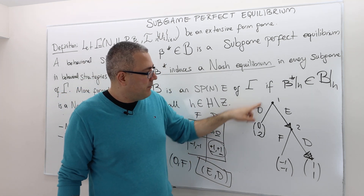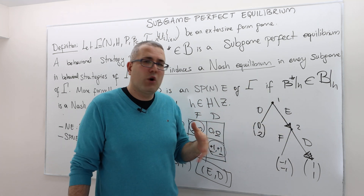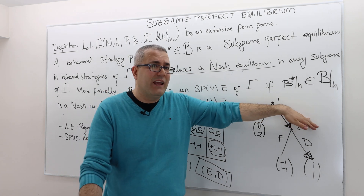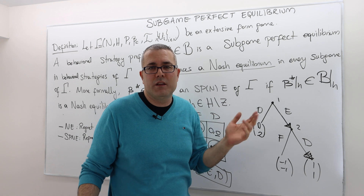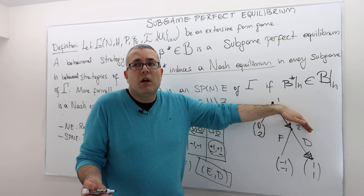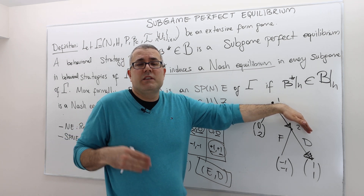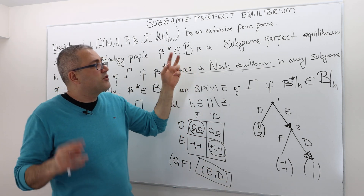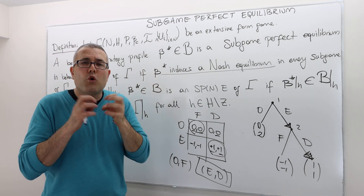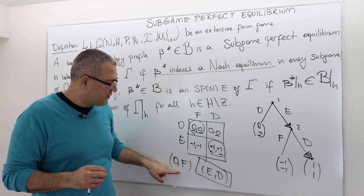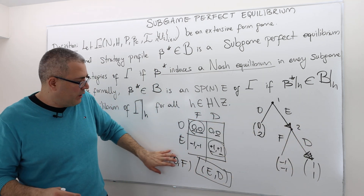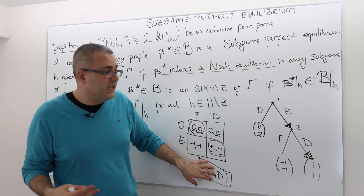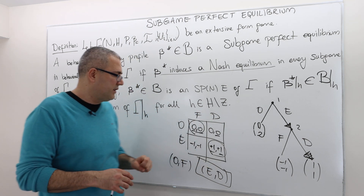Why is Enter-Don't Fight the subgame perfect Nash equilibrium? Because this game has two subgames: the game itself, and a proper subgame after history Enter, which is where player two makes a move. The Nash equilibrium of that subgame: since player two doesn't have any opponent, player two maximizing his payoff is the Nash equilibrium strategy — so it's Don't Fight. Now, the restriction of the strategy profile Out-Fight to this subgame means player two plays Fight — but that is not a Nash equilibrium of this subgame. Whereas Don't Fight is. So Enter-Don't Fight is the only SPNE in pure strategies.